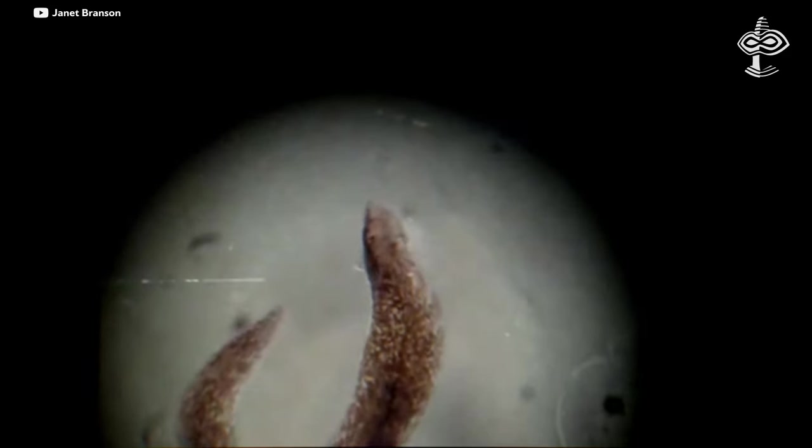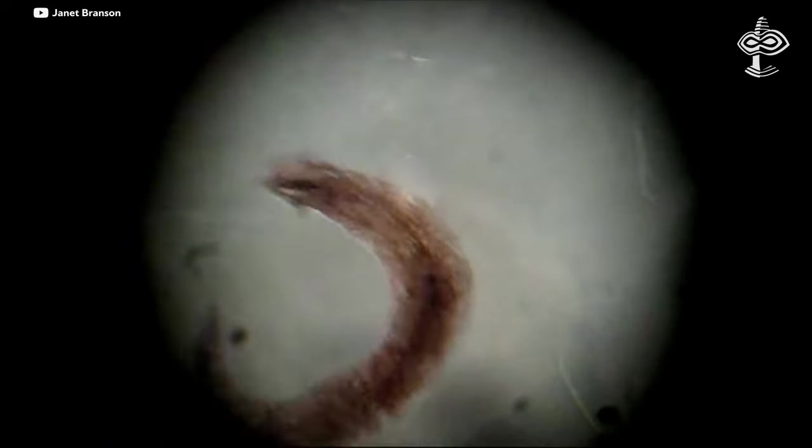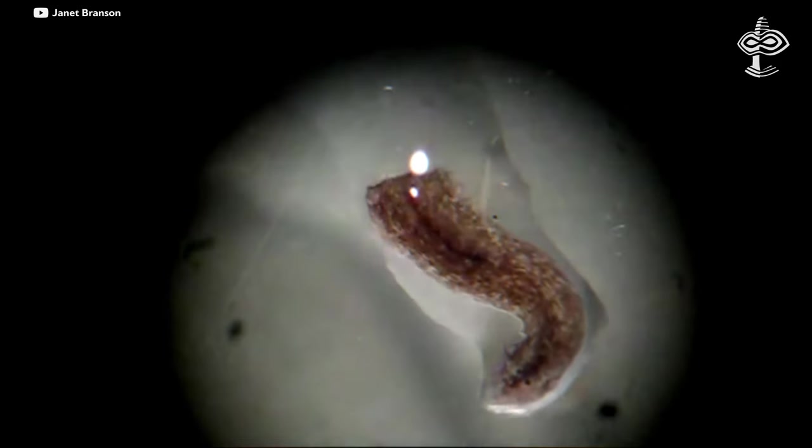In Levin's experiments with planaria flatworms, it turns out that if you train it and then cut their heads off, the tail will regenerate a brand new brain that still remembers the original information, which poses a profoundly big question.